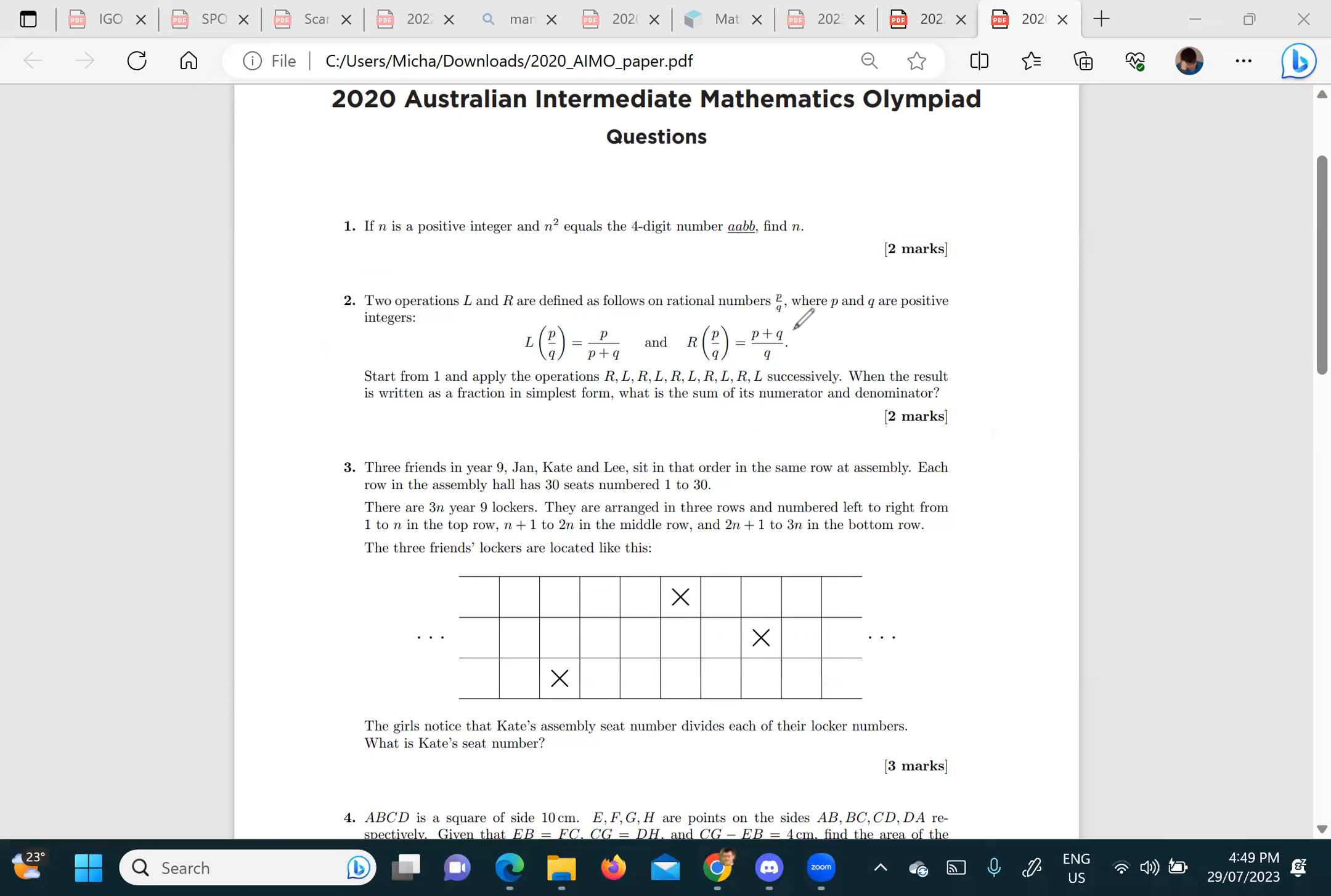When you manually do it you're assuming that the operations are actually defined. I'm trying to tell you that outside the exam you should actually check that they are defined. So you start with one on one and you apply R, which adds the numerator to the denominator, and then you apply L, which adds the numerator to the denominator.